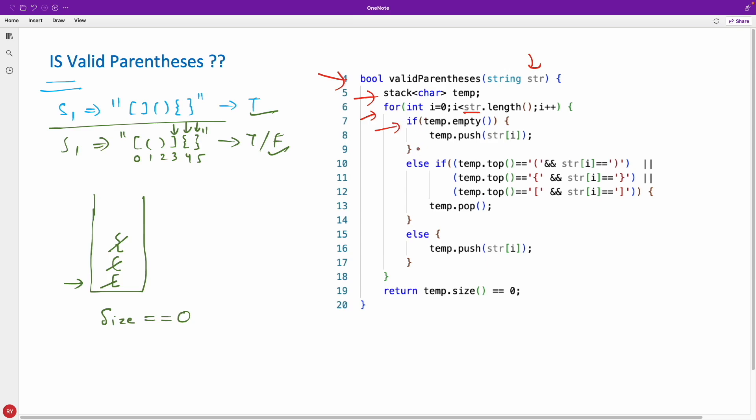First case is initially your stack is actually empty. If that is the case, you just put the first parenthesis inside that and you just go back because you don't have to do anything because your stack was empty itself. Then you increment your i and go to another one.